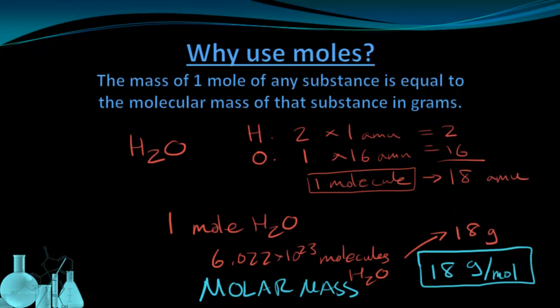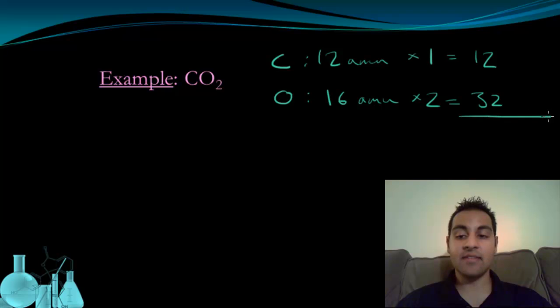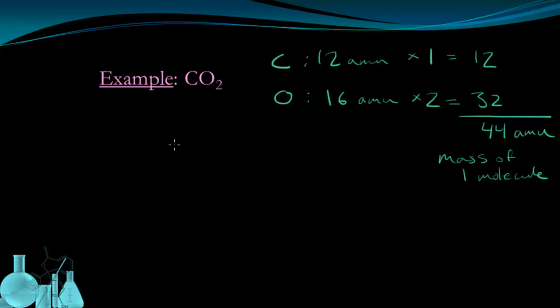Let's look at another example, and we'll specifically look at calculating the molar mass. Here we have carbon dioxide. Carbon dioxide is made up of carbon and oxygen. We know that carbon is 12 AMUs from the periodic table, and that oxygen is 16 AMUs. According to the formula, there's only one carbon, and there are two oxygens. So I'm going to multiply these through and get 12 and 32. Then I'm going to add these up to get the molecular mass, which is the mass of one molecule.